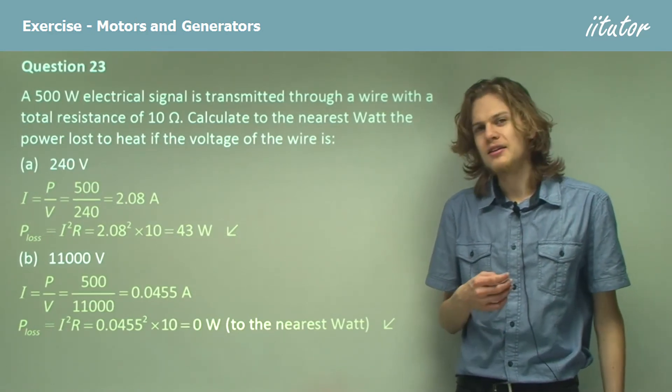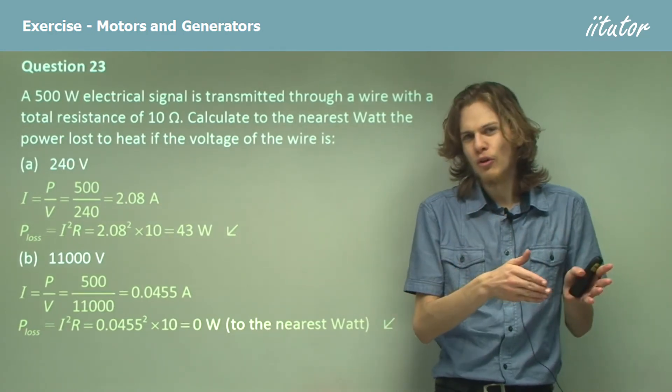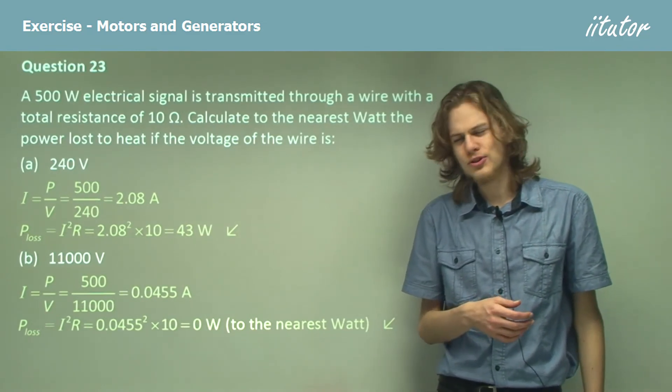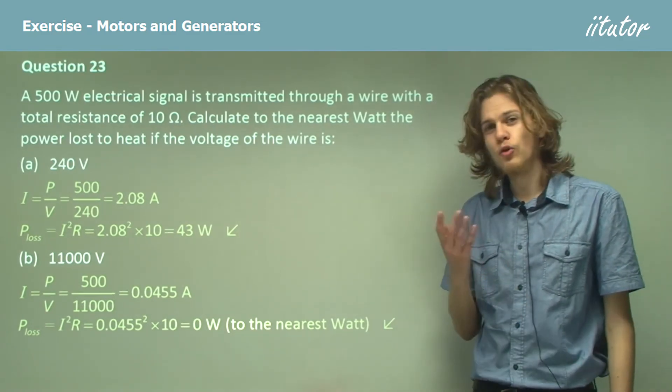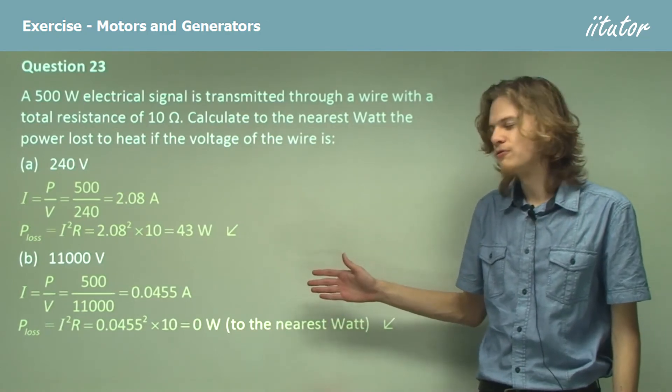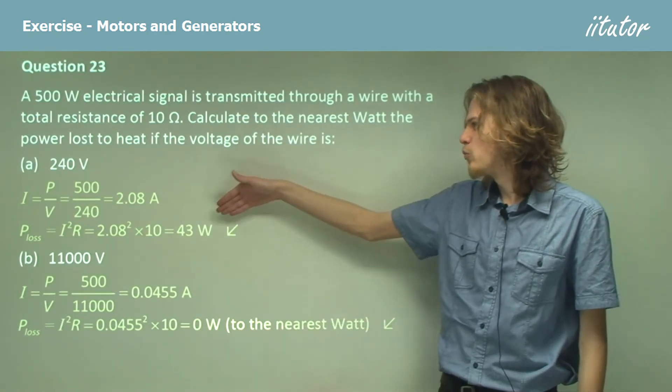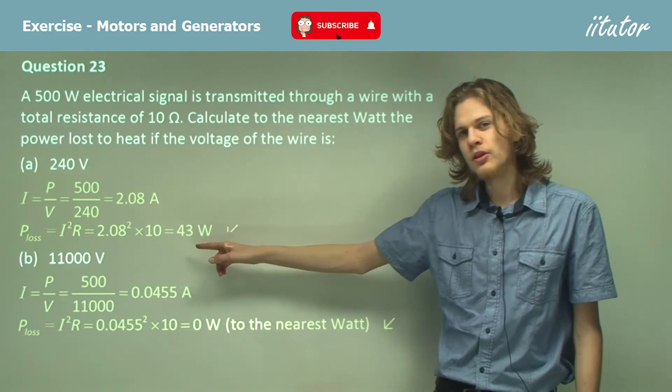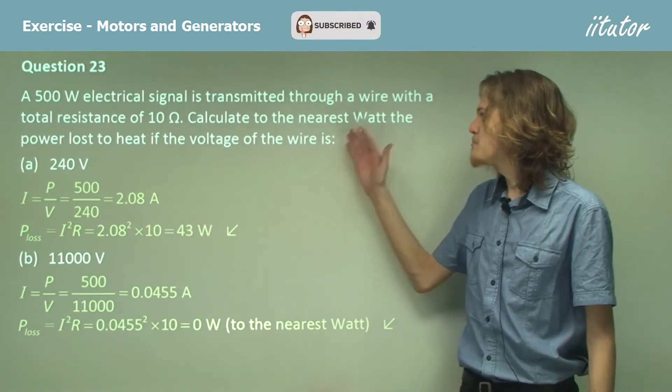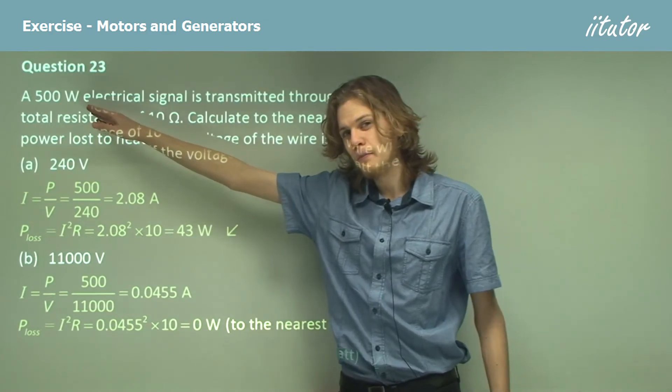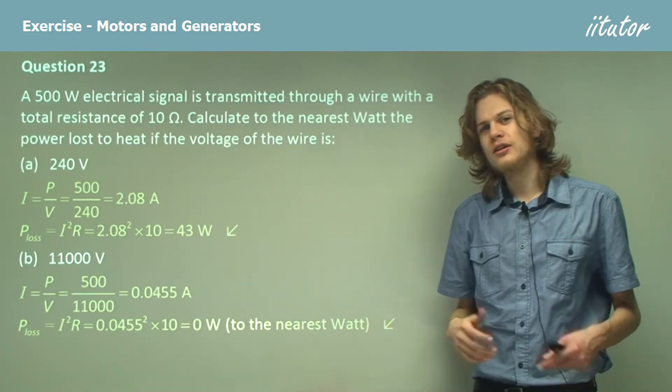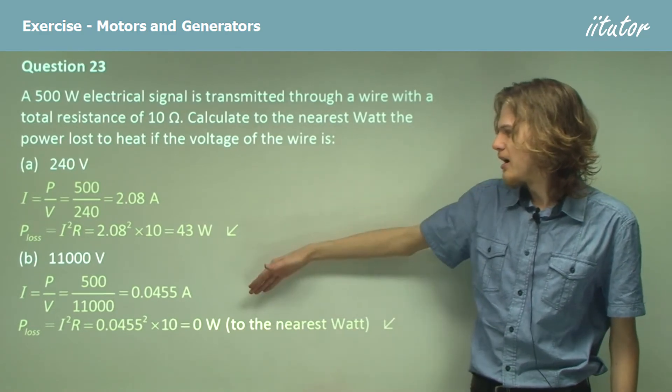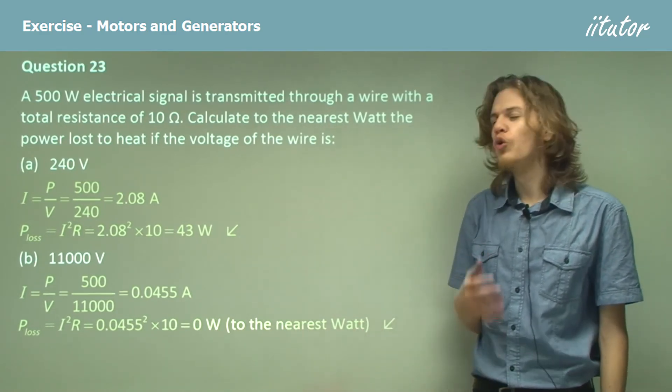In reality it is a very small amount of watts, about 1/20th of a watt or something like that. But for all practical purposes, we're losing far less energy than when we ran it through this voltage. In fact in this case, 43 watts is almost 10% of the original signal, which means that we're losing a huge amount of energy. Whereas in the case of 11,000 volts, we lose almost none of it.